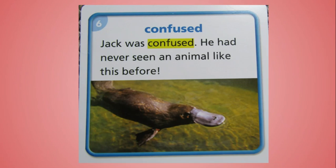Our next word is confused. It has that -ed ending, which changes it to the past tense. Our base word is confuse. It says Jack was confused. He had never seen an animal like this before. If you're confused, you don't understand what's happening or what to do. Can you think of a time that you felt confused? Maybe you were confused by a new lesson in math, or maybe by what was happening in a story. What do you usually do if you're confused in class? You might raise your hand and say you don't understand the directions, which is why our definition for confused means you do not understand what is happening or what to do.